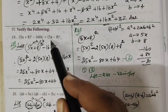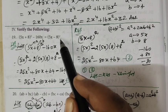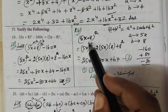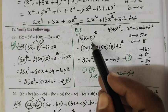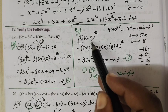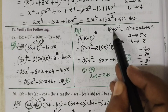Now consider RHS. RHS is (5x − 8) whole square. This is the (a − b) whole square formula. What is the (a − b) whole square formula? Here is plus, here is minus.